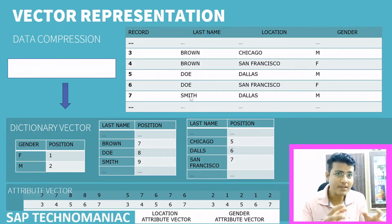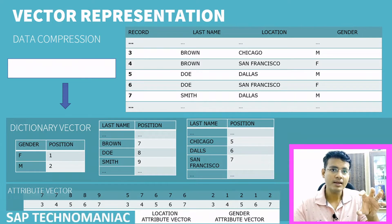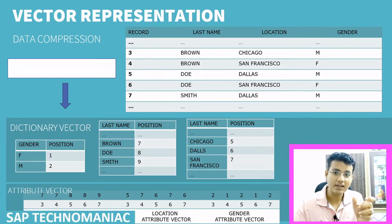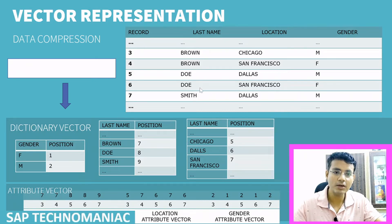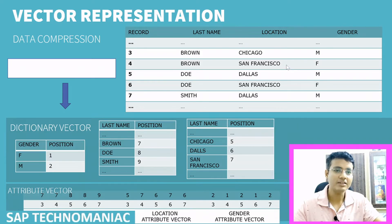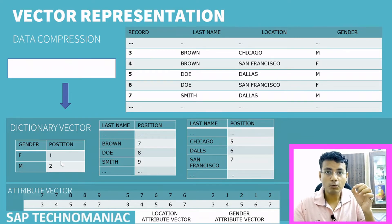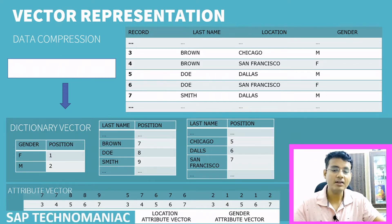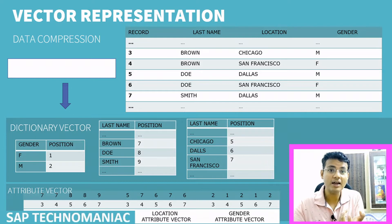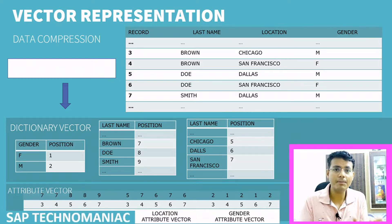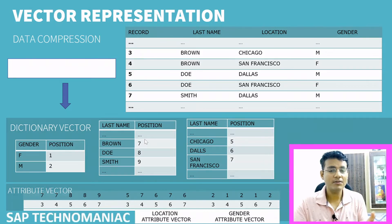You can see how SAP is storing the data. First, it will store all string or text-related data in a dictionary vector, representing each string in the form of a number. For example, the last names are Brown, Brown, Doe, Doe, Smith — so Brown, Doe, and Smith are unique values. The dictionary vector assigns unique integer values to these. Same way, for location and gender, one dictionary vector each is created.